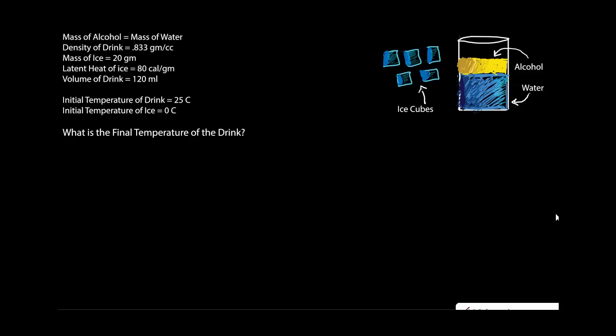Let's start this question. I have just mentioned all the things that we will require to solve this problem. The mass of alcohol is mass of water and they have also given us that the density of the drink is this much grams per cubic centimeter.